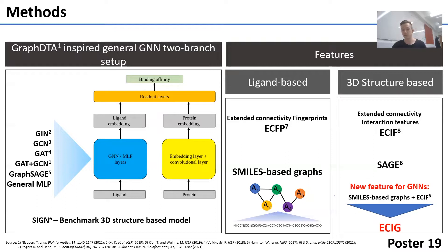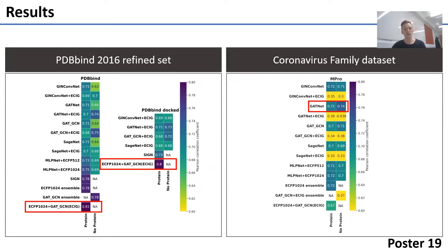For the feature sets, we use ligand-based features for graphs, and we also came up with a new contact-based graph that we call ECRG, heavily inspired by the extended connectivity interaction features — ECAF fingerprints. On the results end, the PDB-bind refined set 2016 data is shown on the left. The best model is a bagged model between ECRP fingerprints and our ECRG graphs with a 0.81 Pearson correlation coefficient. Most interestingly, it does not lose performance when testing on docked structures, which is normally the biggest disadvantage of structure-based methods.